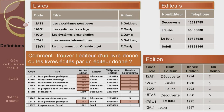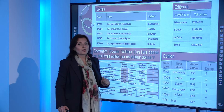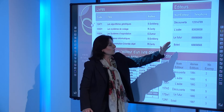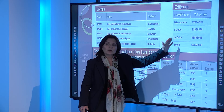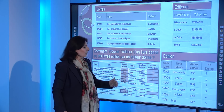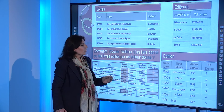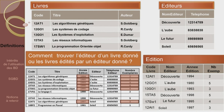Si on a à modifier une donnée concernant un livre, on n'a qu'à le faire dans la structure livre. Si un éditeur change de numéro de téléphone, on le modifie une seule fois dans une seule ligne dans la table éditeur. La structure édition nous donne une idée sur chaque édition : par exemple, le livre dont le code est 12AT1 apparaît deux fois dans cette structure pour représenter deux éditions différentes du même livre.